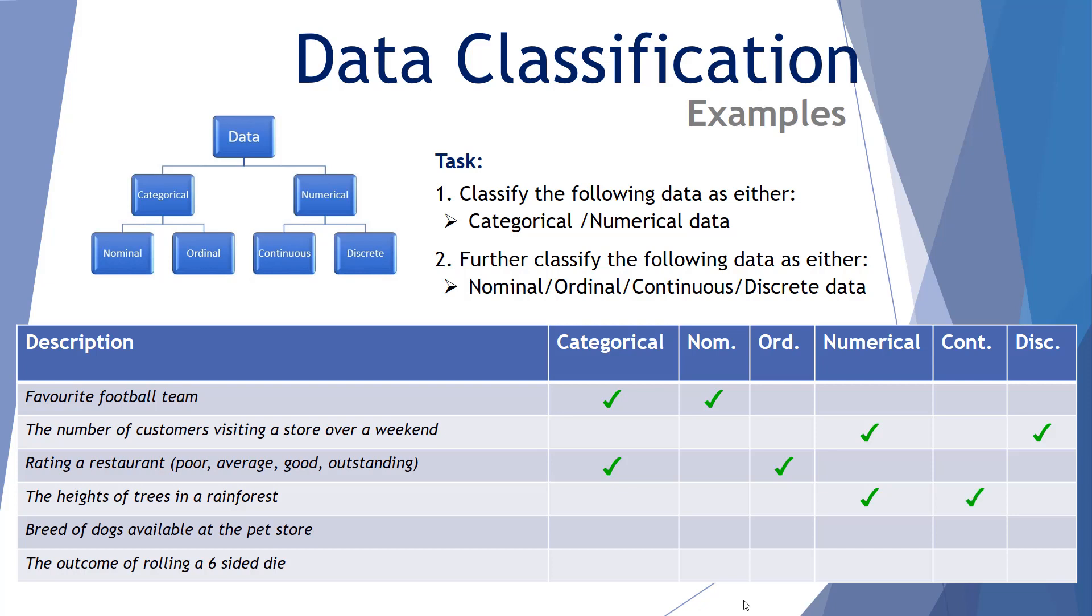Number five, the breed of dogs available to pet store. That's categorical. And there's no particular order. So that's nominal data. And finally, the outcome of rolling a six-sided die. That's numerical. We'll get a number from one to six, which is fixed and discrete. There's only one to six possible outcomes.